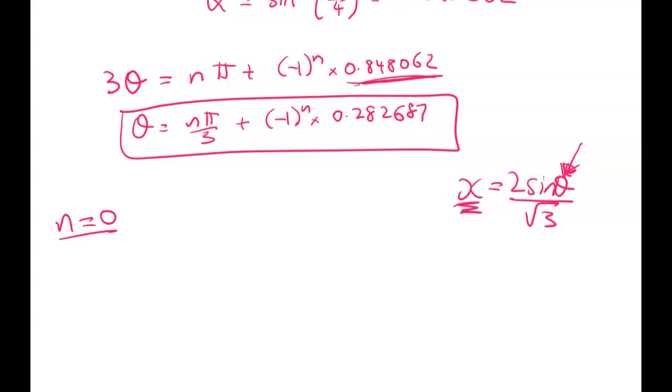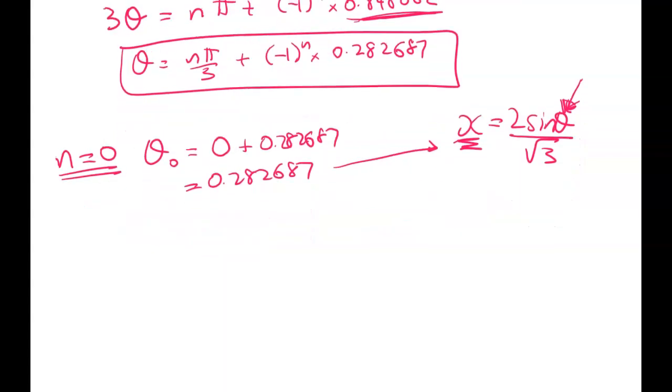I'm going to start with substituting in. So good practice when you're doing particular solutions is to show this working. So we'll start with n equals 0. So theta naught is equal to 0 plus 0.282687 which is 0.282687. Because I'm going to be shoving it into there don't round it too hard. Okay so that's good.